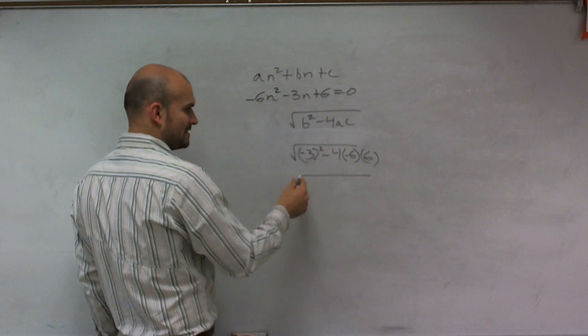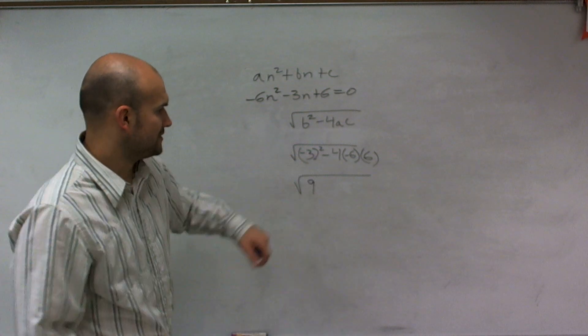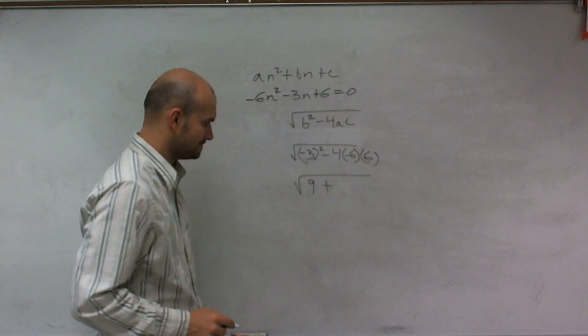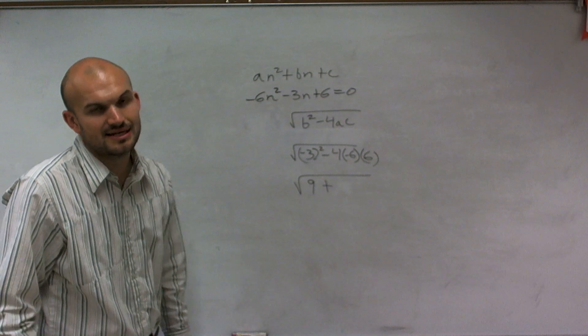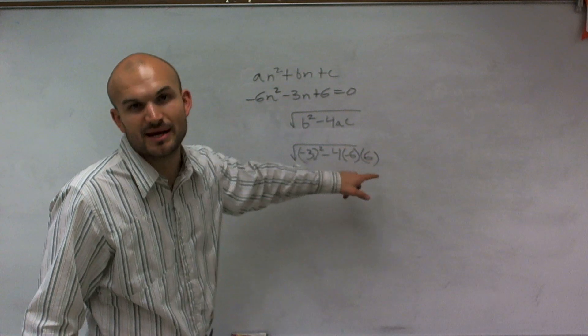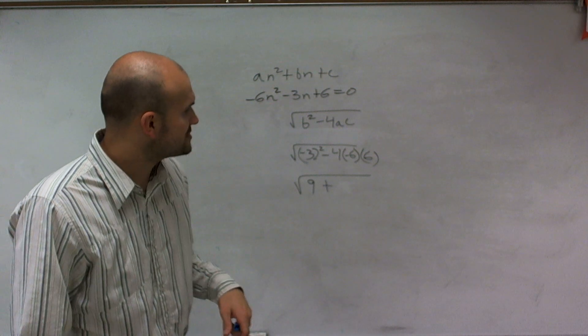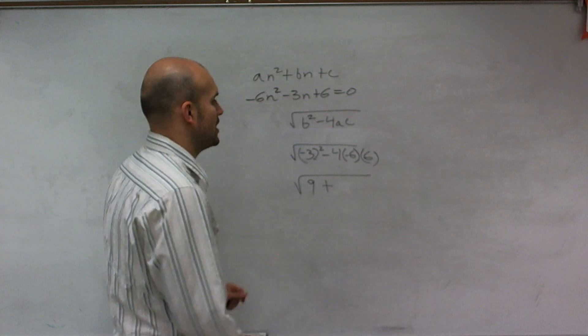So therefore, I get 3² which is 9. And you can see it's actually going to be plus. And then I do 6 times 6, which would be, because the two negatives will make it plus, 6 times 6 is 36, so 4 times 36 is 144.